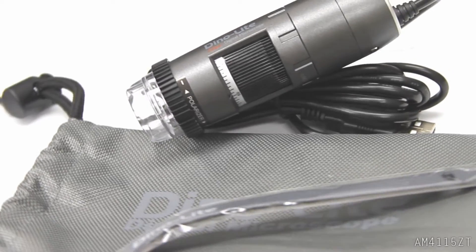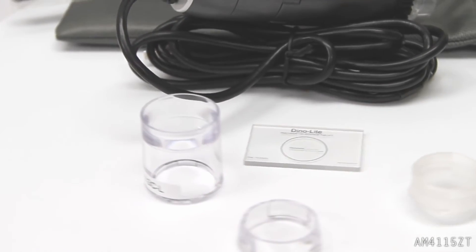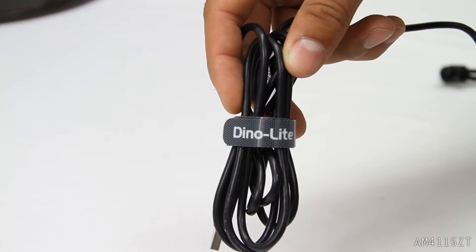The AM4-115ZT includes a carry pouch, cable velcro, interchangeable caps, and measurement calibration slide.